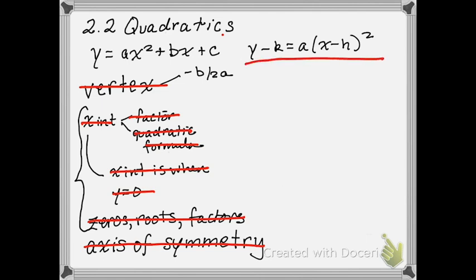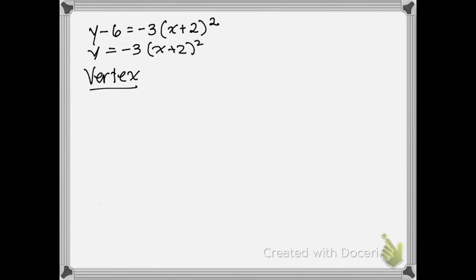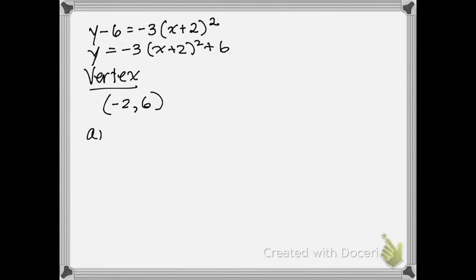Here is an equation in vertex form. For the vertex, we don't need to do anything special because we can think about the shift. This is a parabola x squared that has been shifted. The plus 2 inside shifts it two units to the left, and the plus 6 outside shifts it two units up. So the vertex is (negative 2, 6) based on the shift.